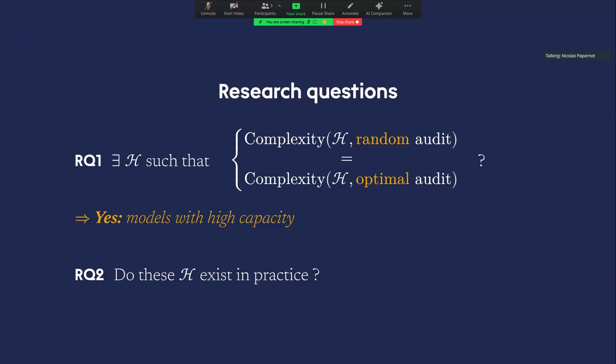So as a recap for now, we have found some types of hypothesis class that increase the cost of the audit arbitrarily for the auditor. And we've shown that these type of models are models with high capacity. And so can we observe this in practice?